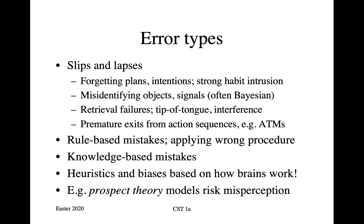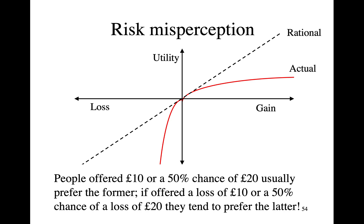To see this in a more quantitative way, there's a theory called Prospect Theory, due to Kahneman and Tversky, which gives us a reasonable model of some aspects of risk misperception. It quantifies the old saying that a bird in the hand is worth two in the bush. If people were risk-neutral, they would be entirely indifferent between being given 10 pounds or a 50% chance of winning 20 pounds. However, if you offer people in a psychology lab either 10 pounds or a 50% chance of 20 pounds, they'll usually prefer the certain 10 pounds.